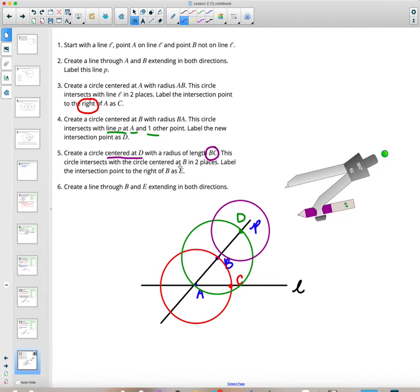It says this circle, the purple one, intersects circle B. Circle B is the green circle. Intersects the circle centered at B in two places. Label the intersection to the right of B. To the right of B, label that as E.